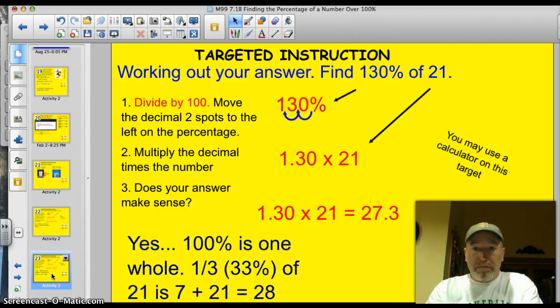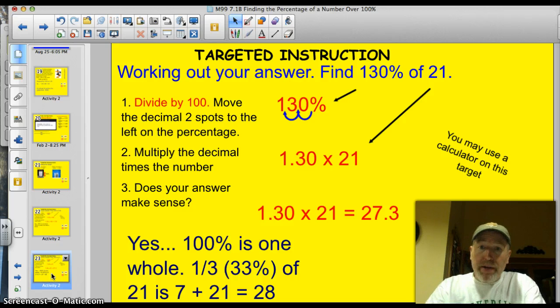Our next problem. We need to work out the answer for finding 130% out of 21. Again, we know it's going to be greater than 21. Follow that same rule. Divide by 100. We are moving the decimal two places to the left to divide by 100. We end up with a decimal of 1.30. We're going to take that times 21. Pop it into the calculator. 1.30 times 21, it's going to come out to be 27.3.